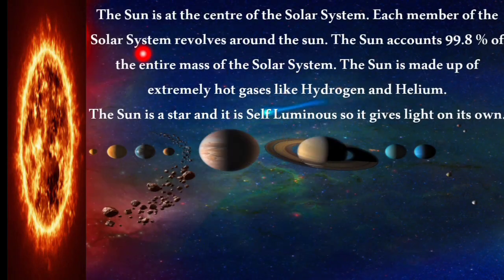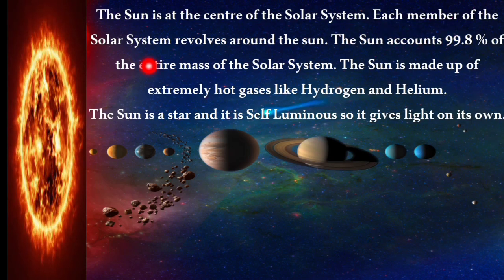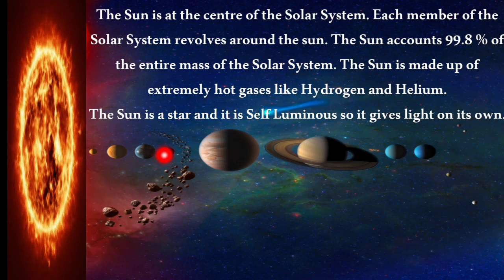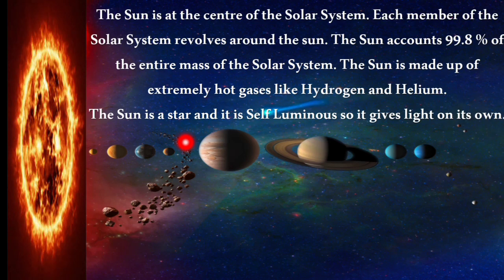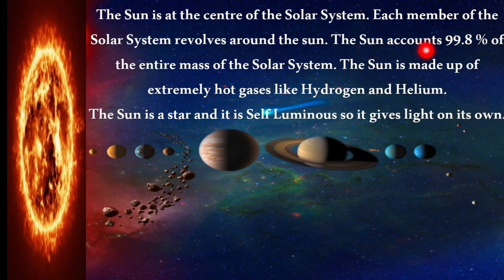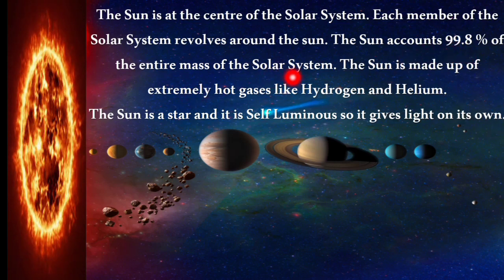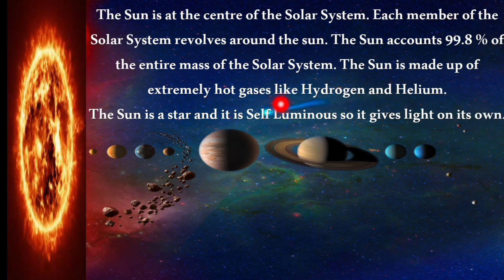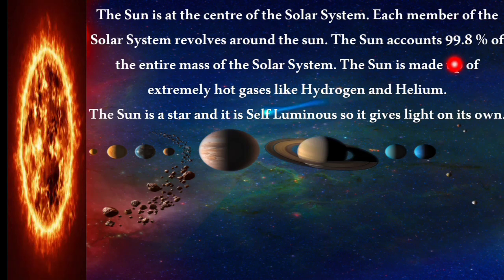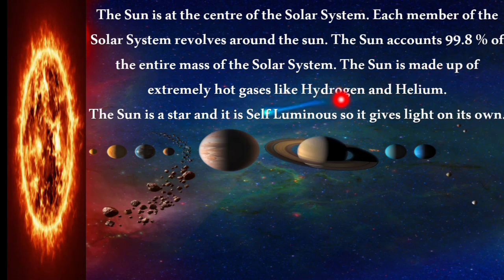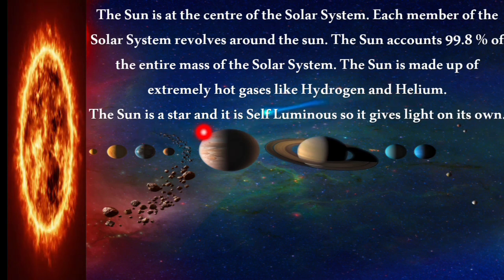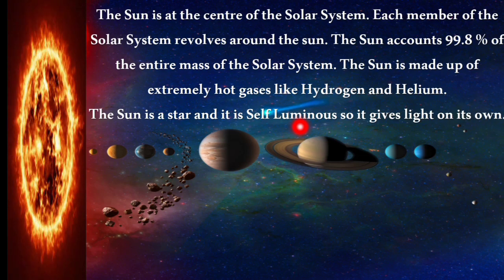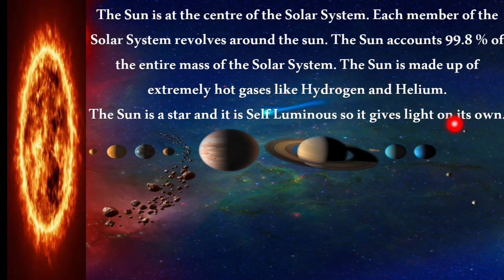The sun is at the center of the solar system and each member revolves around it. The sun accounts for 99.8% of the entire mass of the solar system. It is made up of extremely hot gases like hydrogen and helium. The sun is a self-luminous star, meaning it produces light on its own.